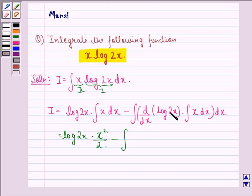d by dx of log 2x will be 1 by 2x into derivative of 2x, which is 2, multiplied by integral of x dx, which is again x square by 2 dx.